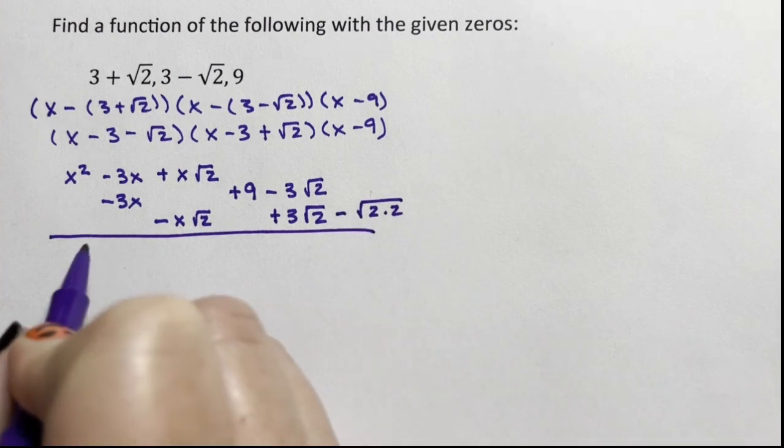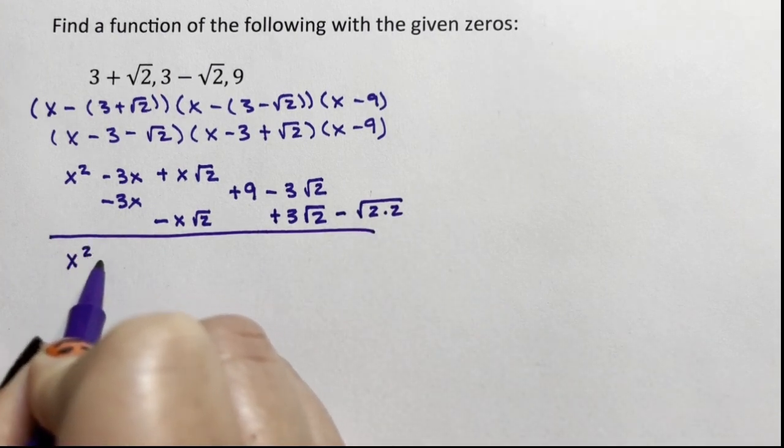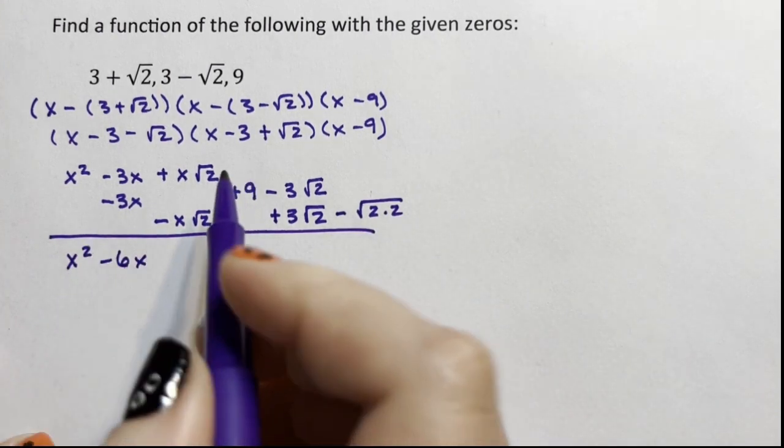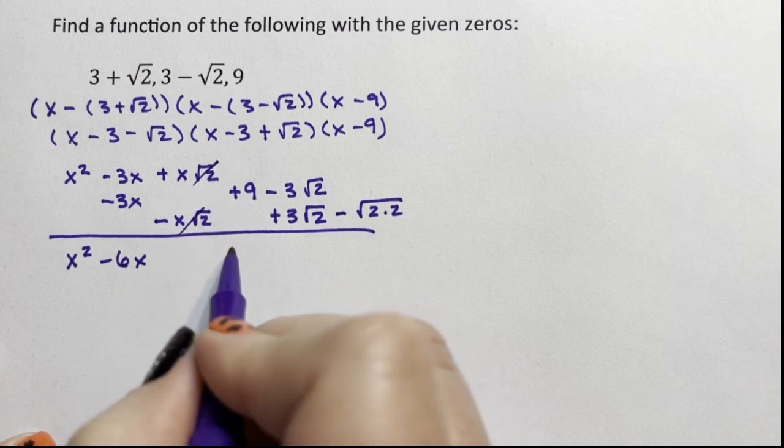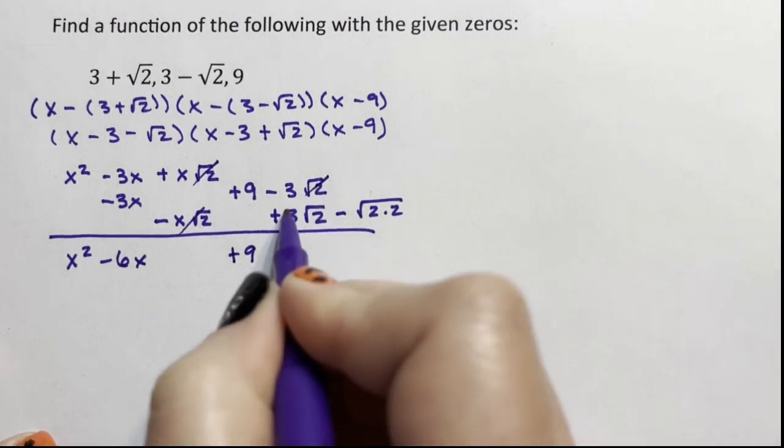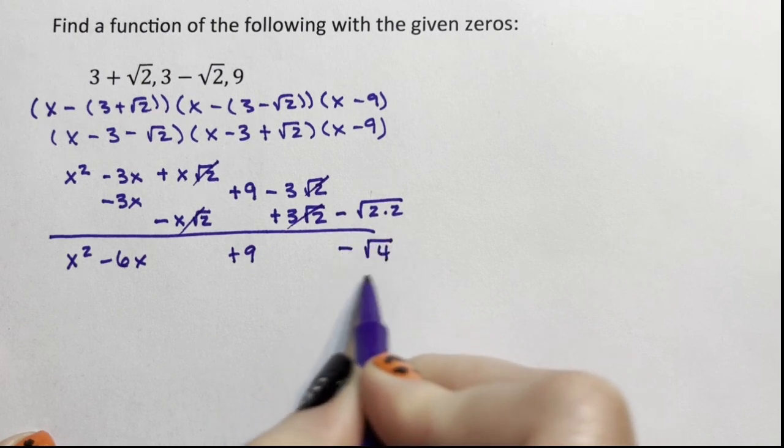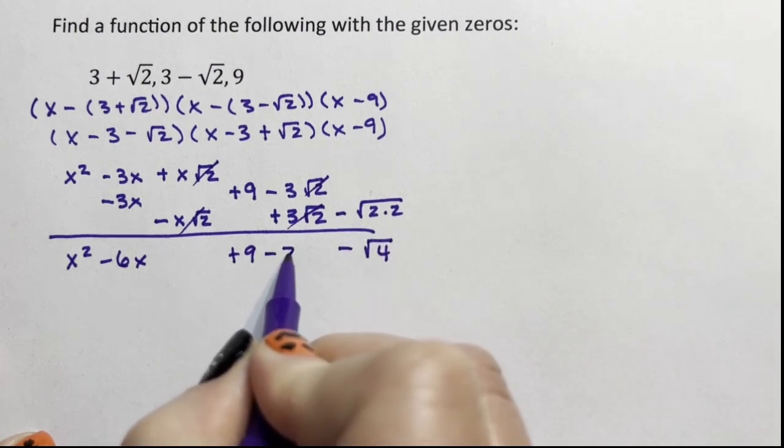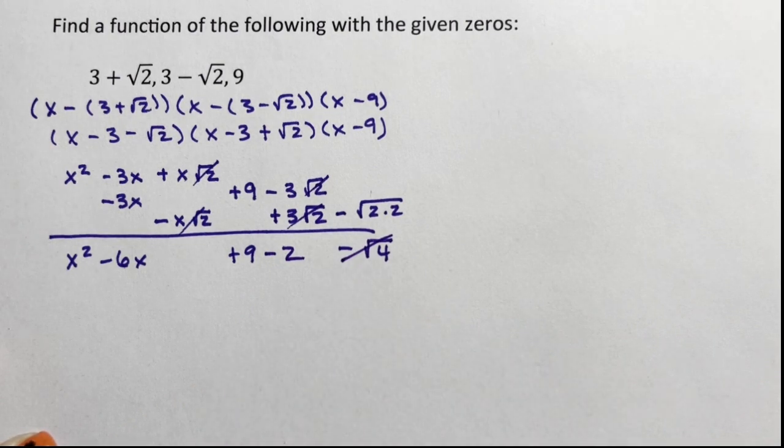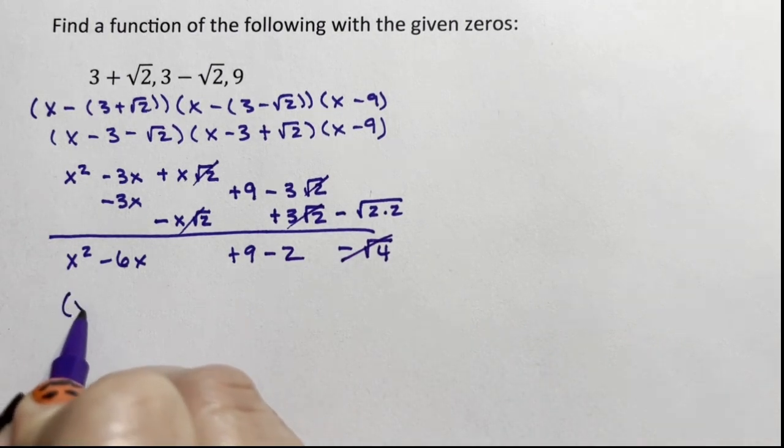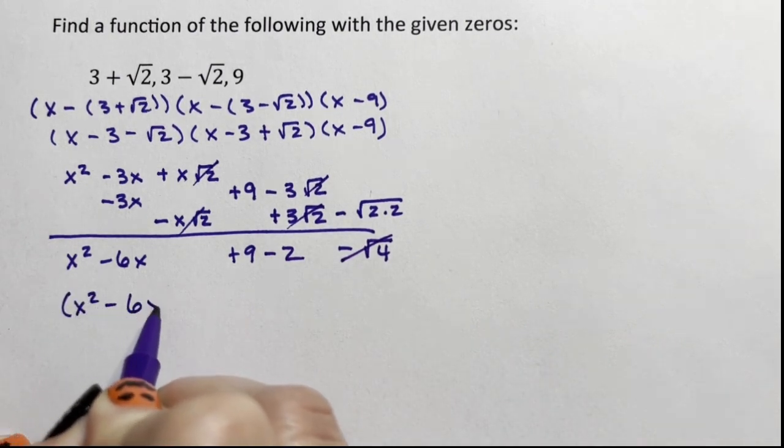When I combine all of this, I'm going to have x squared minus 6x. These are going to cancel plus 9. These are going to cancel minus the square root of 4. Minus the square root of 4 is going to become minus 2. And I'm going to have x squared minus 6x plus 7.